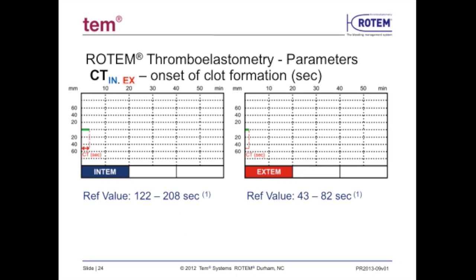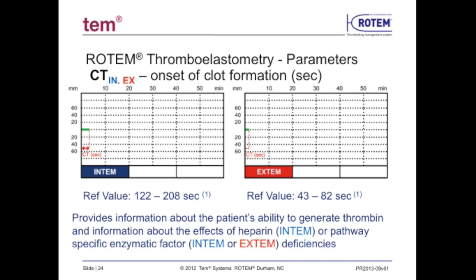The CT is established by measuring the time it takes from the point blood and reagent mix until the early clot starts to develop, resulting in 2 mm of amplitude. The CT provides information about the patient's ability to generate thrombin, the effects of heparin within the Intem test, or pathway-specific enzymatic factor deficiencies in Intem or Extem tests. Evaluation of the CT is important for guiding protamine administration for heparin reversal, PCC administration for rapid reversal of oral vitamin K antagonists, or transfusion of fresh frozen plasma.